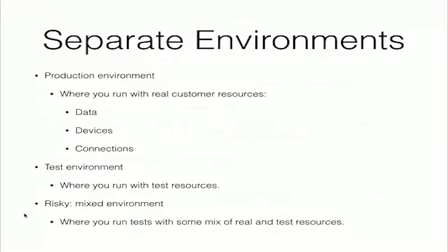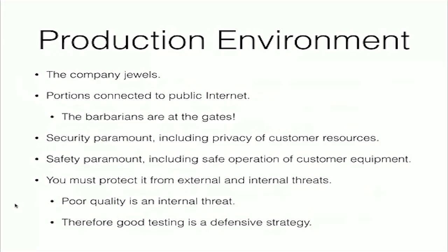For execution environments, you want to have separate environments for all of these activities. The production environment is where you're running with real data, devices, and connections — these are real customer resources. The test environment is where you run with test resources. The production environment is the company jewels — it needs to be protected. Portions are connected to the public internet, and the barbarians are at the gate. Therefore, security is paramount, including the privacy of customer resources. Safety is also paramount, including the safe operation of customer equipment. You must protect it from external and internal threats. Poor quality is an internal threat; therefore, good testing is a defensive strategy.